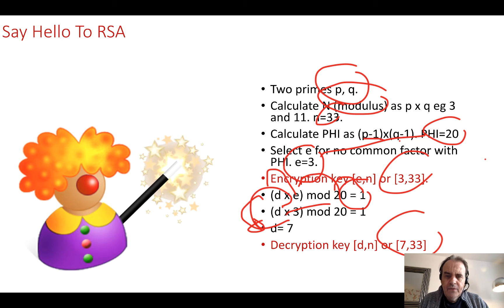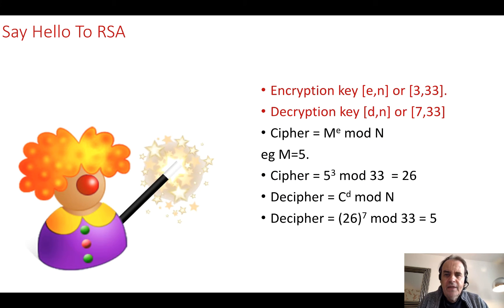That's the way it works. When we cipher, we take the message to the power of E mod N. When we decipher, we take the cipher to the power of D and then do a mod N. So there's an example there. That's the RSA method.